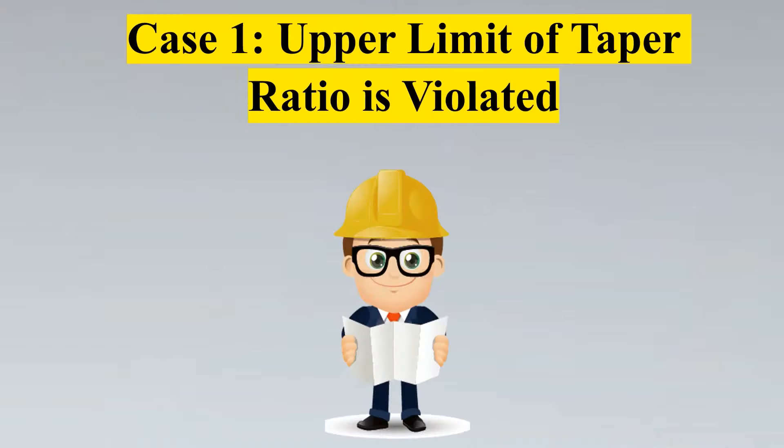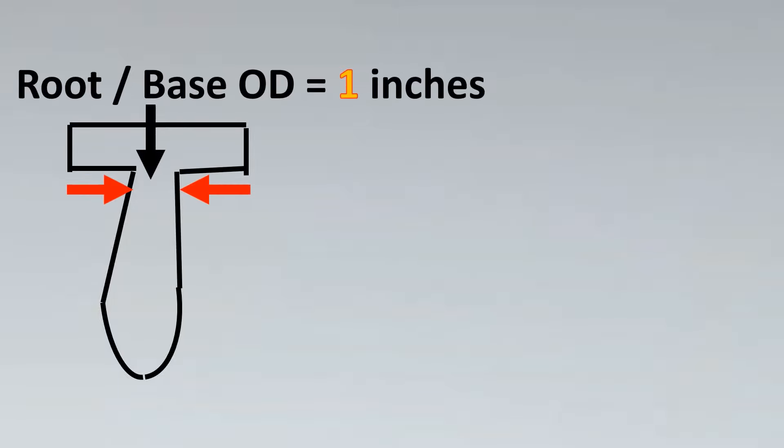This case is the first case where the upper limit of taper ratio is violated. So let's try to go to the upper edge of the taper ratio and see what happens. This thermowell looks funny because you violated the taper ratio here. Let's imagine that your root or base OD is one inch hypothetically, and your tip diameter or tip OD is two inches. Now here if you would notice, we are kind of violating the taper ratio and we can see that by the diagram itself.